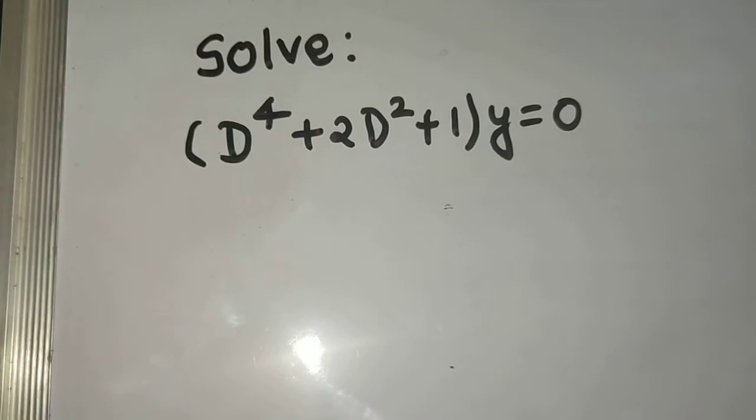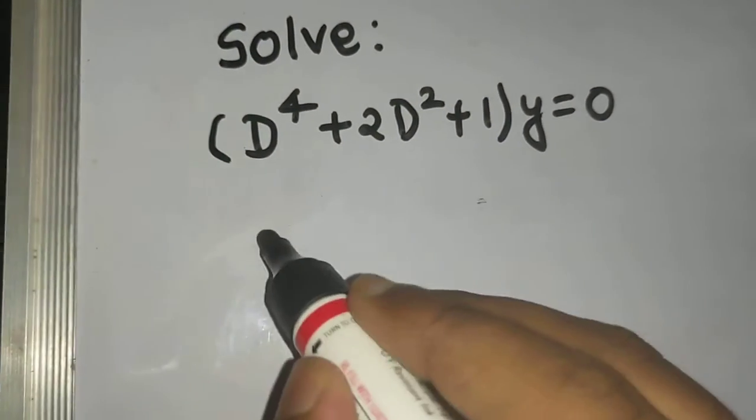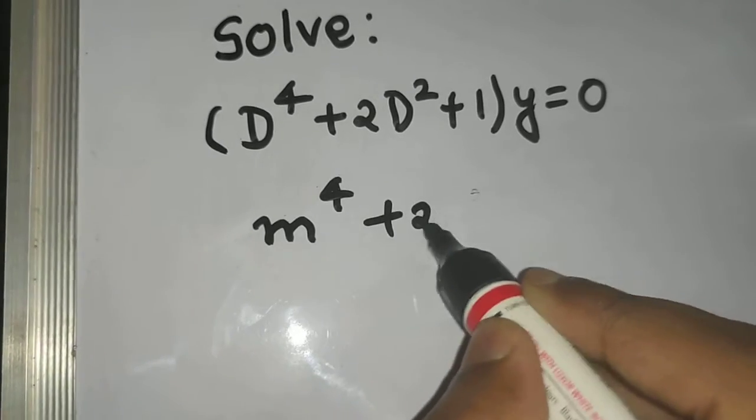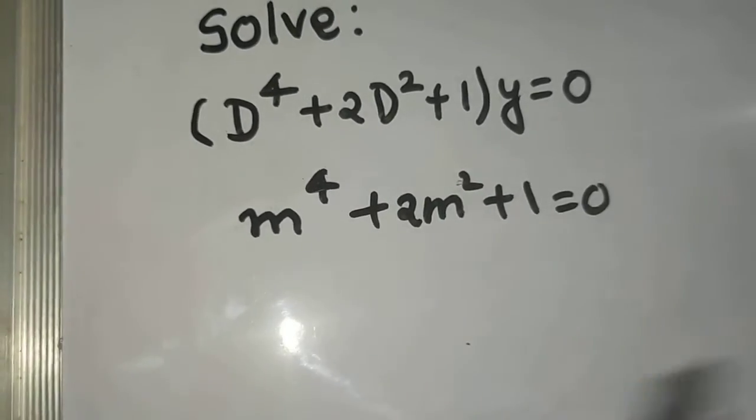And coming to the complementary function. So replace this D by M. So you will get M's power 4 plus 2M square plus 1 and equate it to 0. This is your auxiliary equation.